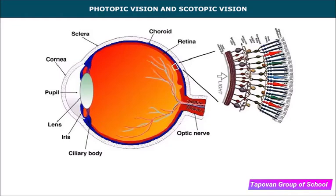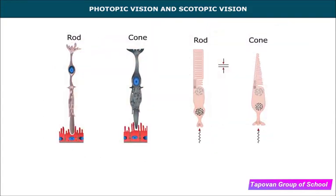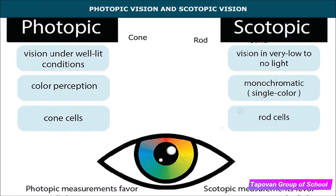The human retina has two types of receptors: cone-shaped and rod-shaped cells. Cones are responsible for color vision, while rods are responsible for sensing intensity. In bright light, cones are active and the iris decreases the size of the pupil to prevent excess light from entering — this is called photopic vision. When we enter a dark room, the pupil increases in size to allow more light in — this is called scotopic vision.